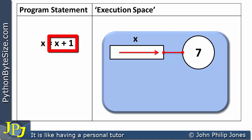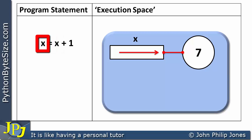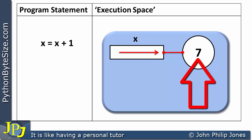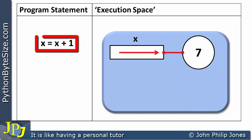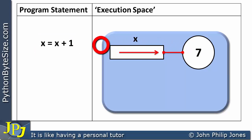Now let's consider the statement x is assigned x plus one. Clearly, we're taking the seven, adding one to give eight, and assigning that eight to x. But I've just said you can't change the object to eight — so we need to realise how Python actually executes this. Consider the computer hardware: the value seven is sent to the arithmetic and logic unit together with one, they're added, and the result eight is created.